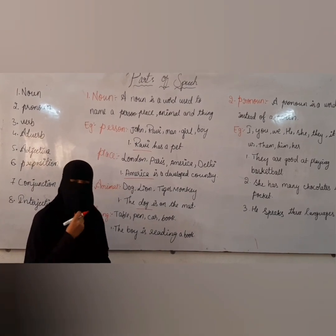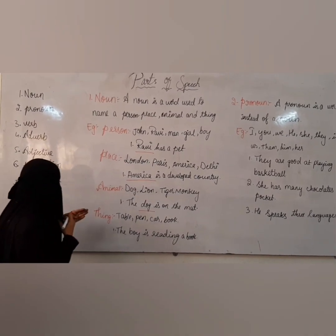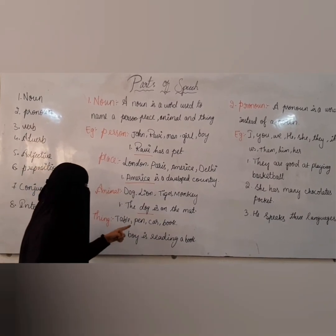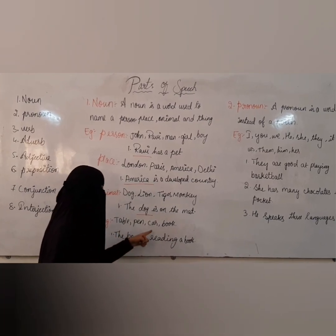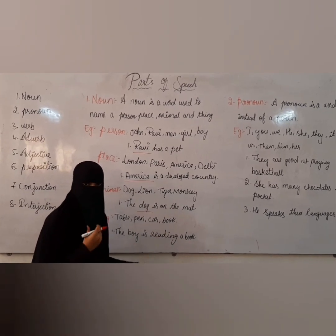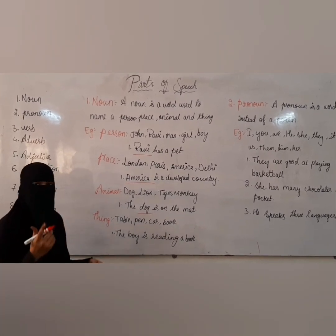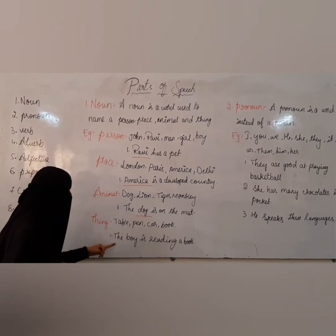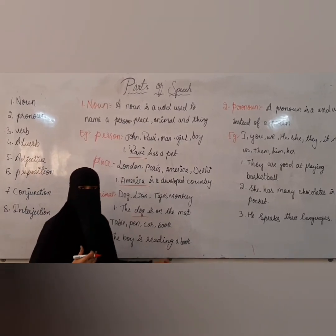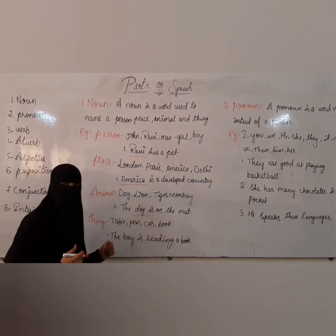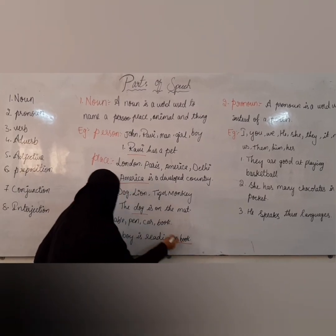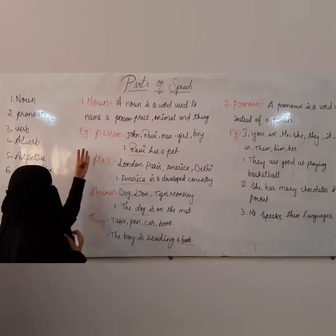Now let's move on to thing noun: table, pen, card, book, etc. Let's see one more example: The boy is reading a book. In this sentence, book is a thing noun.